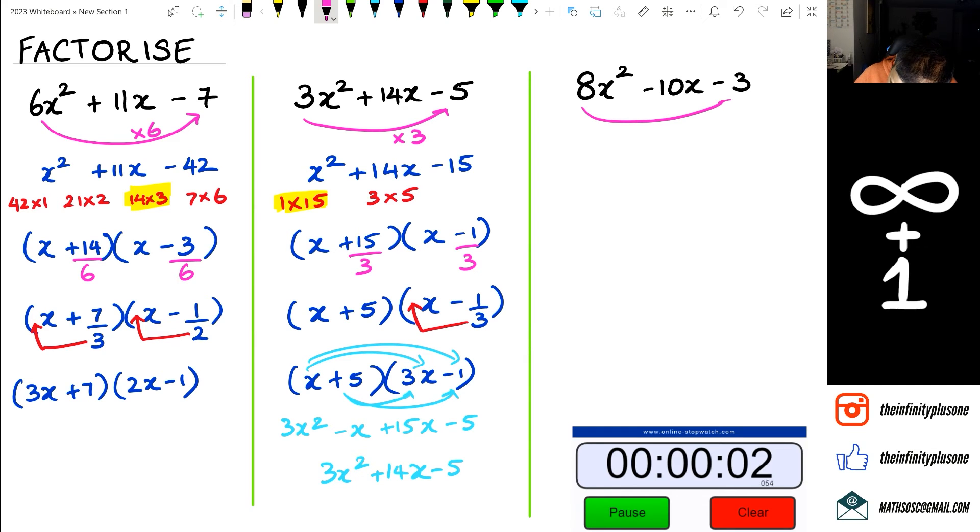Let's do this so I'm gonna do times 8 here which means I'm gonna get x squared minus 10x minus 24. I've got 1 times 24, 2 times 12 that's the one I should be going with so I'm gonna stop there.